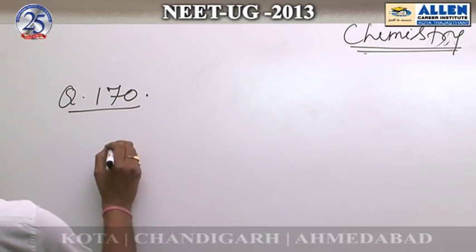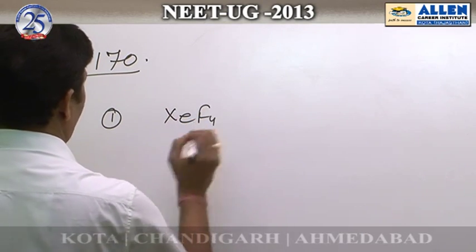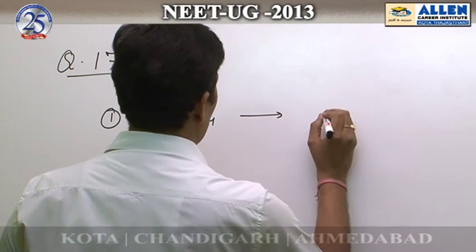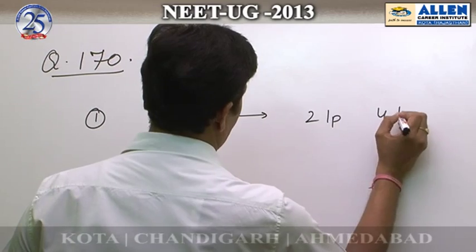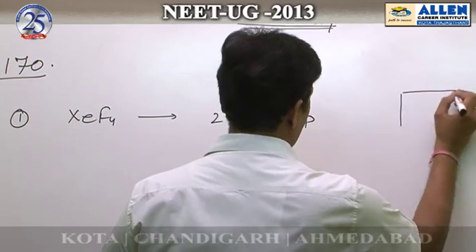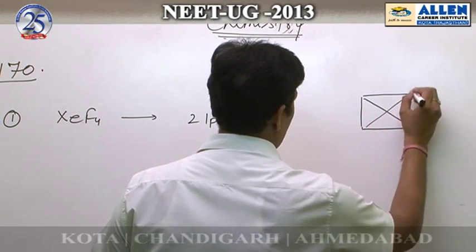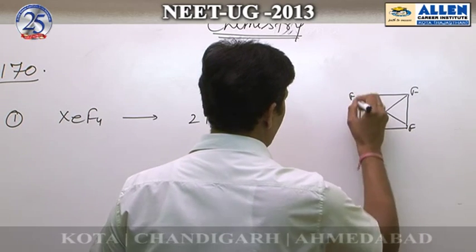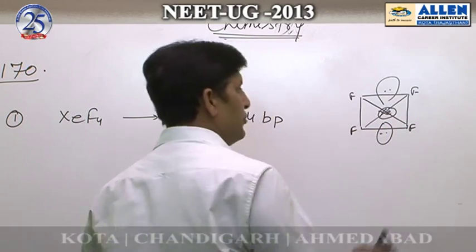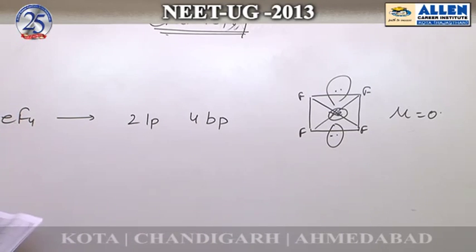First option: XeF4. It has 2 lone pairs and 4 bonding pairs. The geometry is square planar. Drawing the structure — fluorine atoms on all four sides of Xe with two lone pairs — it is symmetrical. Therefore mu = 0, it is non-polar.